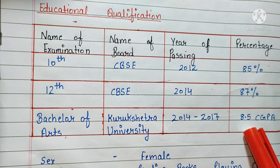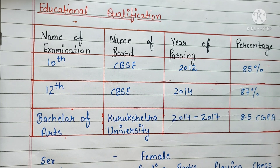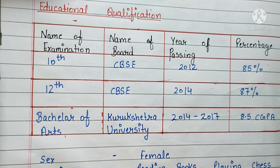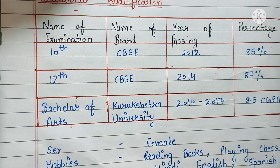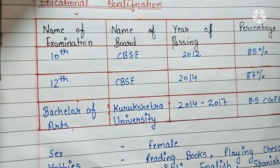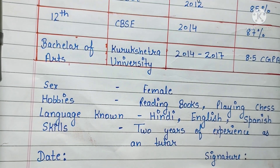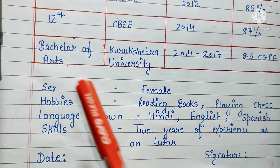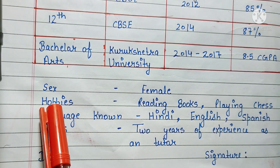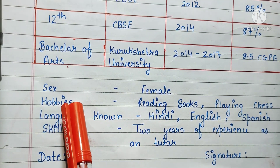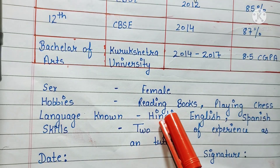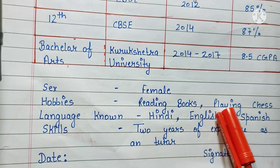Then you have to write your sex — like whether you are female or male. Then you have to write about your hobbies, like: I like to read books and play chess.